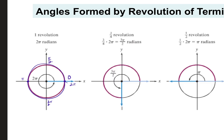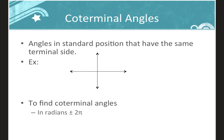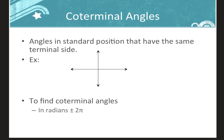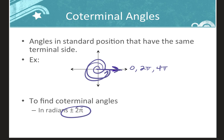Those angles can go positive and negative, and we talked about coterminal angles. Coterminal angles are angles that have the same initial side and the same terminal side. For example, zero and two pi are coterminal. Going around once more gives four pi, also coterminal. To find coterminals in radians, we add and subtract two pi.